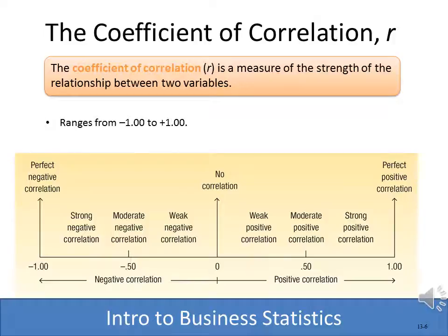Typically, R ranges from 0 to 0.75 to 0.95. If we have a value of 0.5, that would be a moderate positive or negative correlation. Less than 0.5 is a weak negative or positive, and greater than 0.5 is a strong negative or positive, depending on the direction. We're going to show you how to compute R to see how strong the relationship is between the independent and dependent variables.